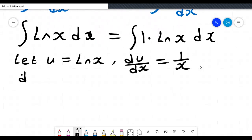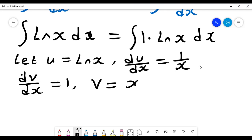We have dv dx as one, and therefore v is the integral of one which is x. So I can comfortably say that the integral of ln of x dx will be equal to, looking at the general formula, u times v.